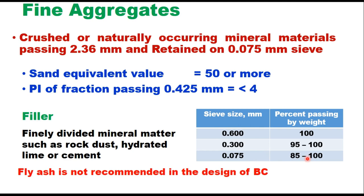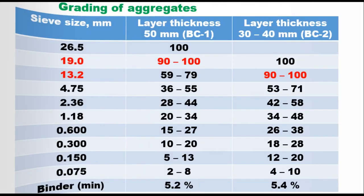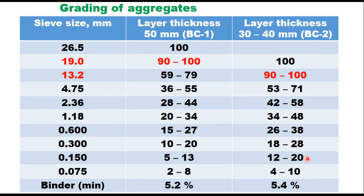Fly ash is not recommended in the design of bituminous concrete. The combined coarse aggregate, fine aggregate and filler in a mix should have gradation satisfying requirements as given in MORTH 2013. Two types of gradings are suggested: BC1 and BC2. BC1 is for layer thickness of 50 mm and BC2 is for layer thickness of 30 to 40 mm, with different nominal maximum aggregate sizes for each.